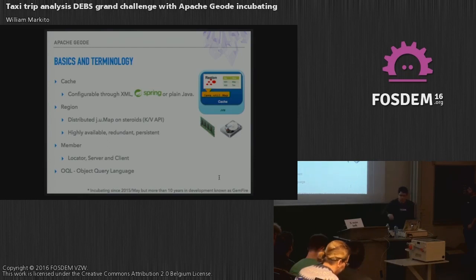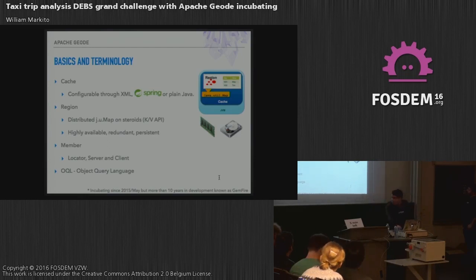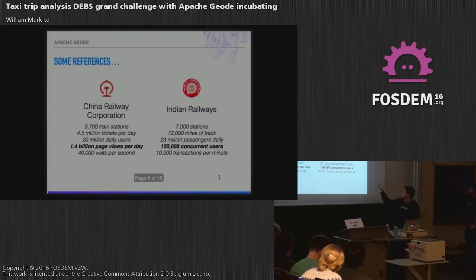We have different kinds of members: locator, servers, and clients, where the locator is kind of a load balancer. And of course you can then do a lot of things with them, including querying data using OQL, which is our way to query objects.